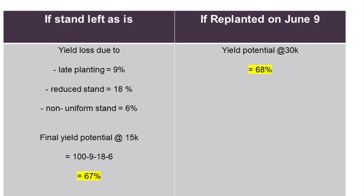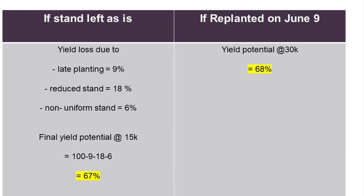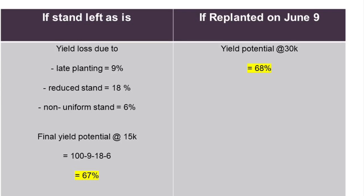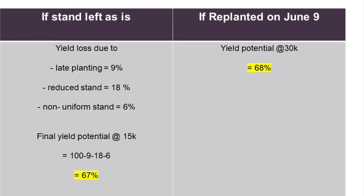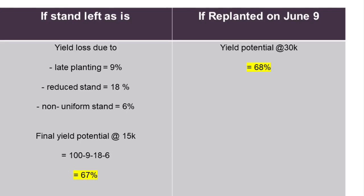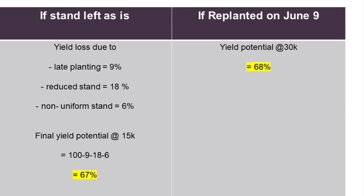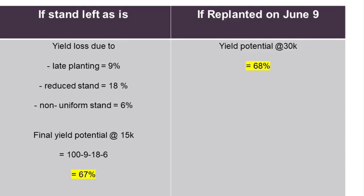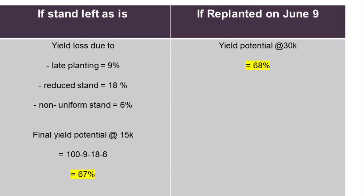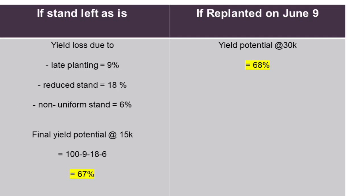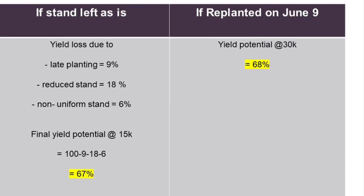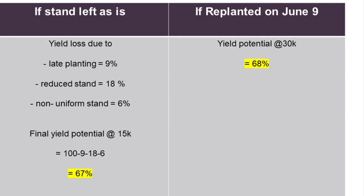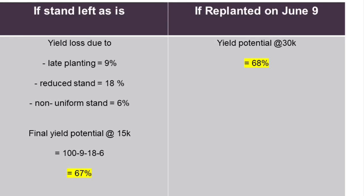We should consider two situations. If he leaves the stand as it is, he would have 9% yield loss due to late planting, bringing it from 100% to 91%. Due to reduced stand from 30,000 to 15,000 plants, he is already losing 18% as well. And if 50% of those 15,000 plants are two leaves behind, that gives rise to another 6% yield loss. So the final yield potential at 15,000 plants per acre is only 67%, compared to 68% if he replants on June 9th. I can provide you the formula for that in a document at the end of the video.